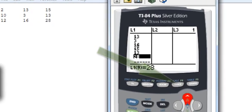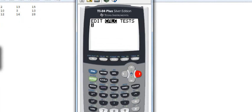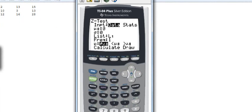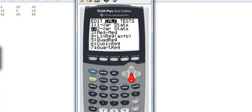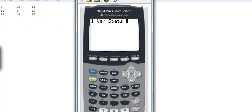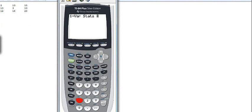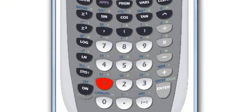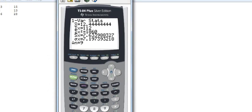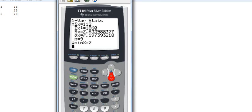So to calculate the 5 number summary, you go to stat, go over to calculate, calc, one variable stats. And we want to do one variable statistics on L1. So I'm going to hit 2nd, 1. And since L right there is blue, so I need to make it blue by hitting 2nd. That lets the calculator know that I want to compute one variable statistics on list 1. You hit enter. And you have your results right there. So you have the mean, standard deviation, which we'll talk about later. n, lowercase n is your sample size, minimum, and q1, median, q3, and max.